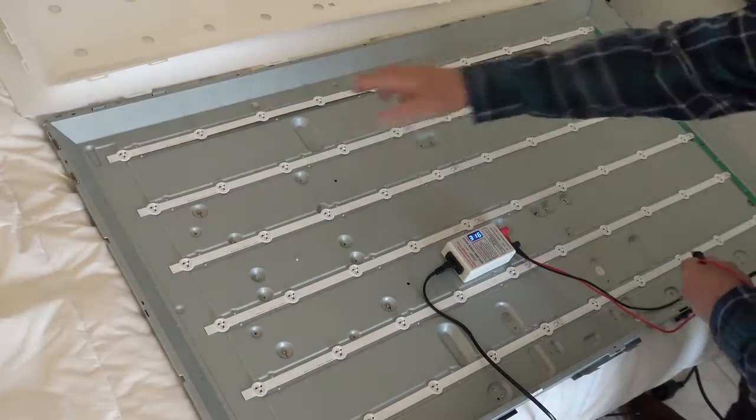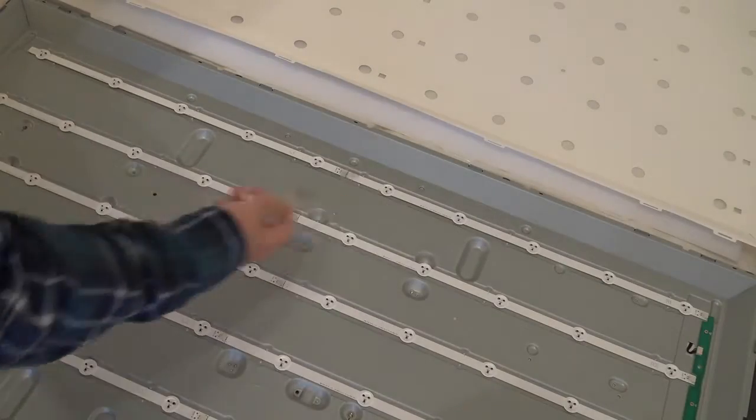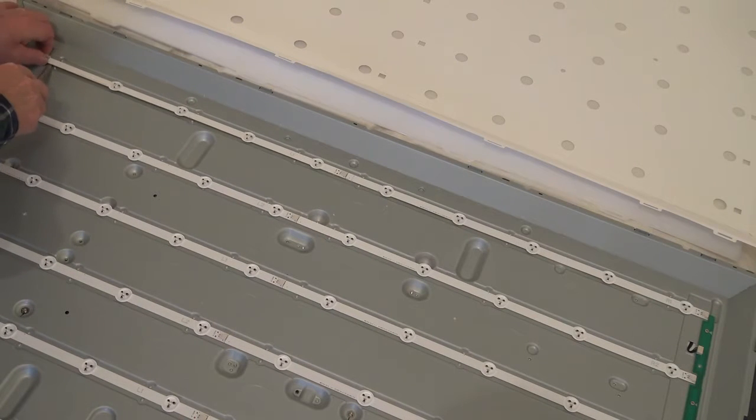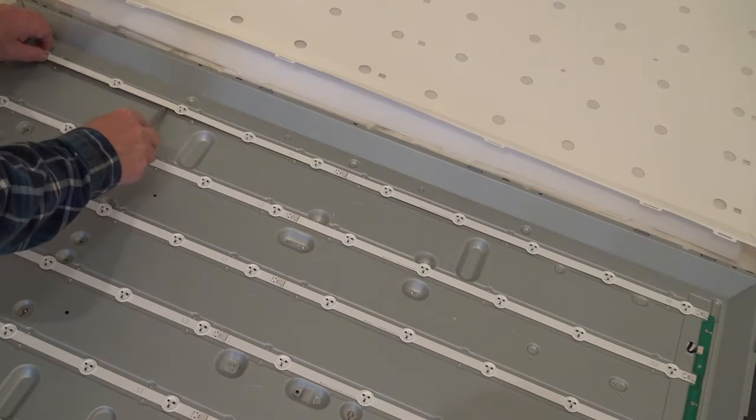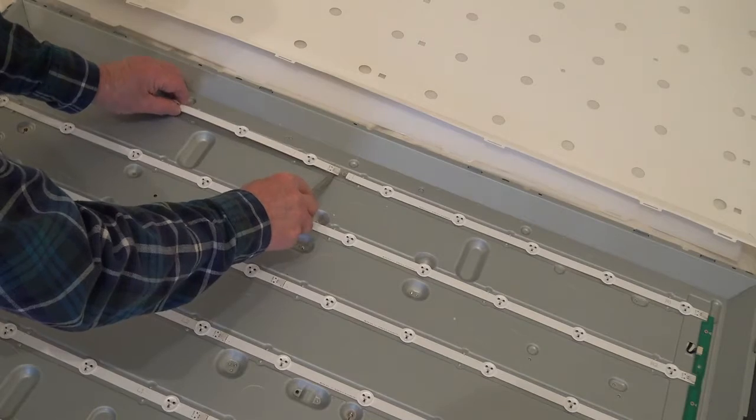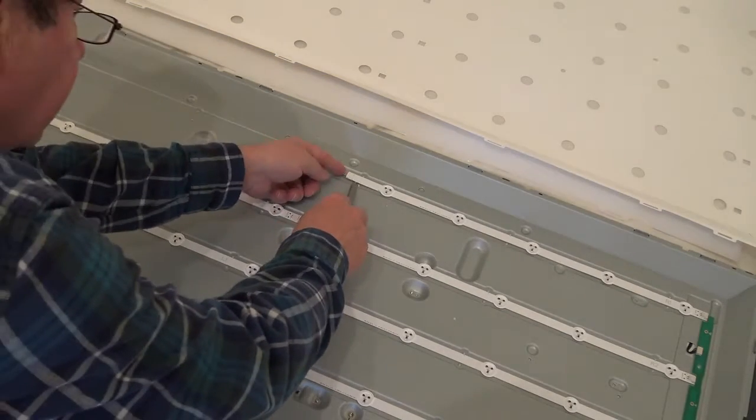It comes in two sections and they just pull apart. These are just stuck on with double-sided tape, so carefully lift them up. Disconnect from there, pull that out, and now the second one, that just pulls out from there.